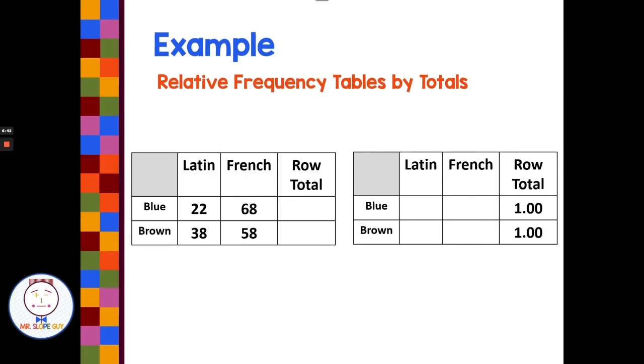So we have Latin and French and we have blue eyes and brown eyes. And so we have for our Latin class with 22 people with blue eyes, 68. And French class with blue eyes, Latin, 38. We're brown, so we're matching up our variables. So then, see on our relative frequency table, we have the 1.00, 1.00 for the row totals.